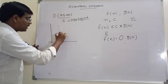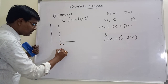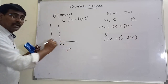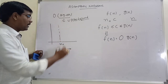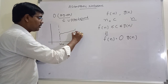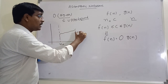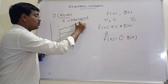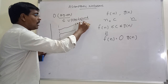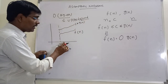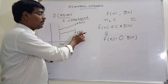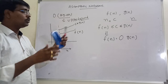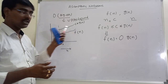In pictorial form, for some value n0, this is f(n) and this is c into g(n). After n0, the f(n) value is less than or equal to c into g(n).